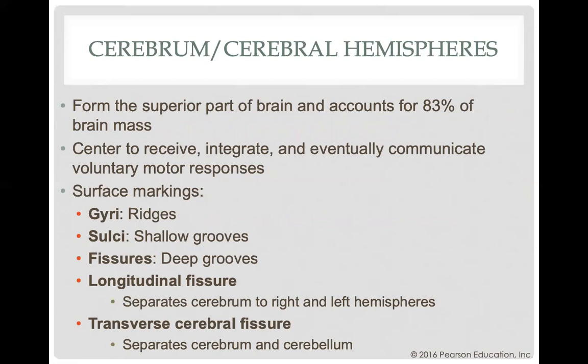83 percent of your brain mass is considered to be cerebral — a huge part of the brain — performing major functions including receiving data, integration, and communicating with skeletal muscle for voluntary control. There are specific patterns and structures on the surface of your cerebrum: ridges on the surface are called gyri (singular: gyrus), and the shallow grooves that create those ridges are called sulci (singular: sulcus).